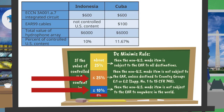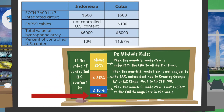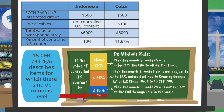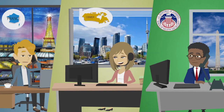François asks about the 0% threshold. The counselor explains: There are certain U.S. origin items for which you do not need to calculate the de minimis level, as any U.S. content will make the non-U.S. made item subject to the EAR. This does not apply to your hydrophone array, but if the U.S. content is described in Section 734.4(a) of the EAR, the shipment is subject to the EAR — no math needed. A text box appears stating: 15 CFR 734.4(a) describes items for which there is no de minimis level.